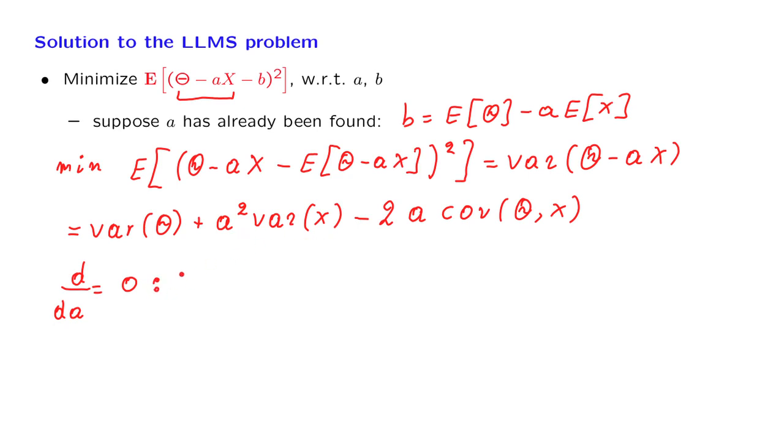And that's going to give us 2a times the variance of x minus twice the covariance of theta with x equal to 0, from which it follows that a should be equal to the covariance of theta with x divided by the variance of x.